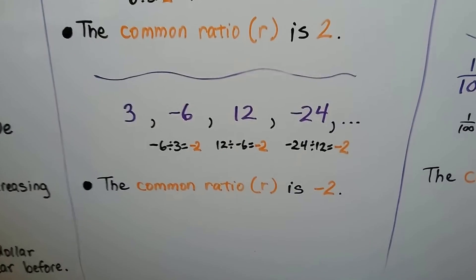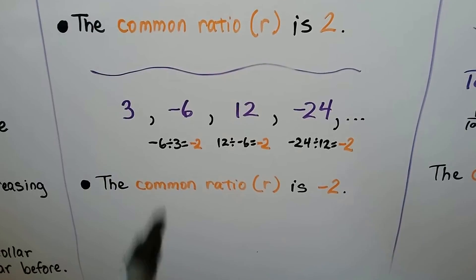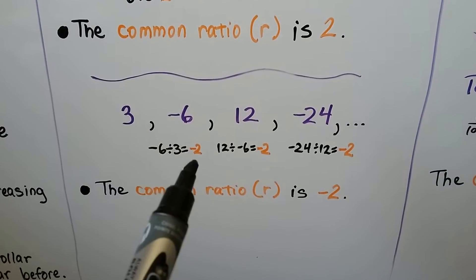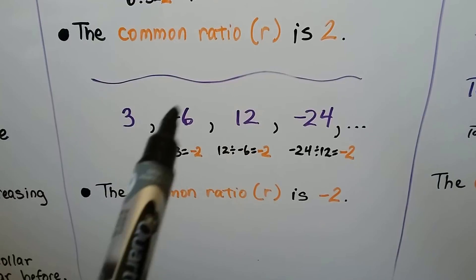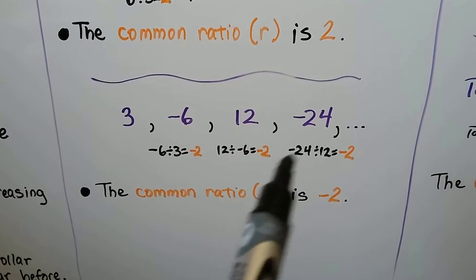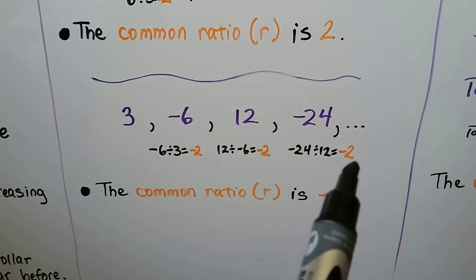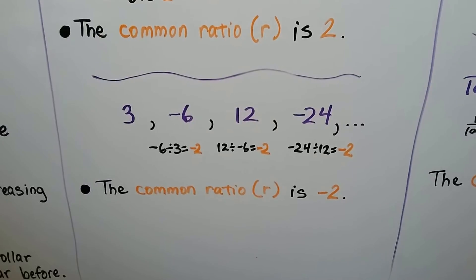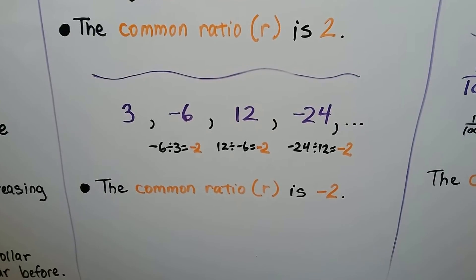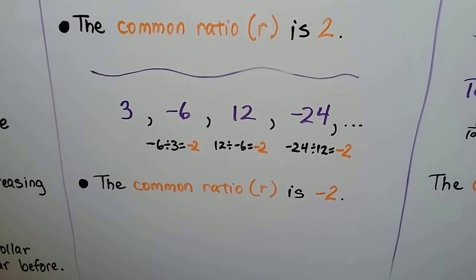Here we have some alternating signs. We do negative 6 divided by 3, that gives us negative 2. 12 divided by negative 6 gives us negative 2. Negative 24 divided by 12 gives us negative 2. So we know that common ratio, r, is negative 2.